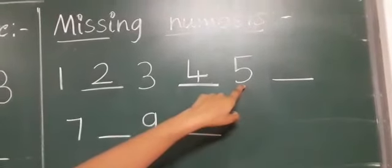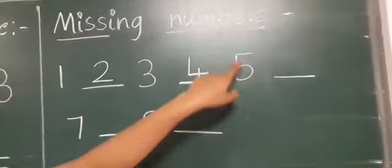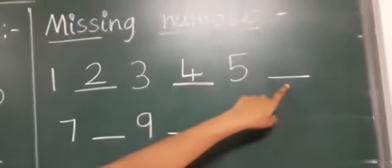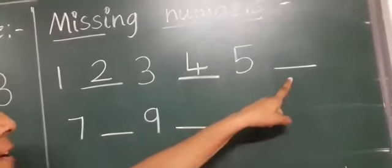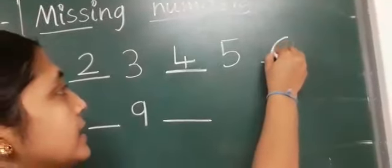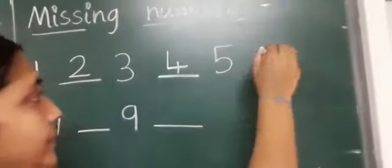After number five, which number comes children? Yes. You all are very smart children. The number six. Next.